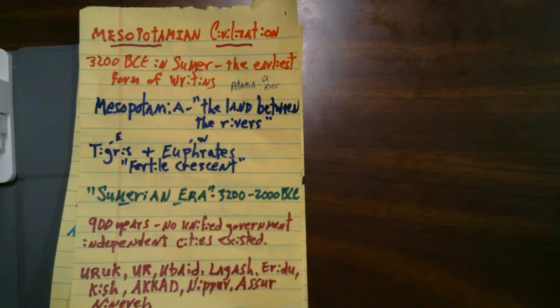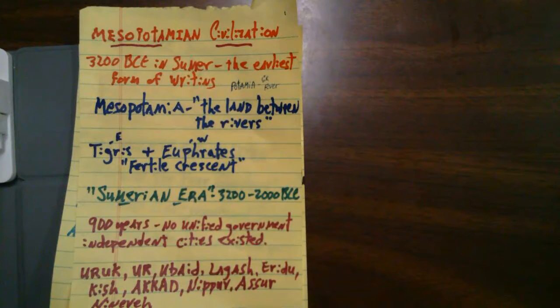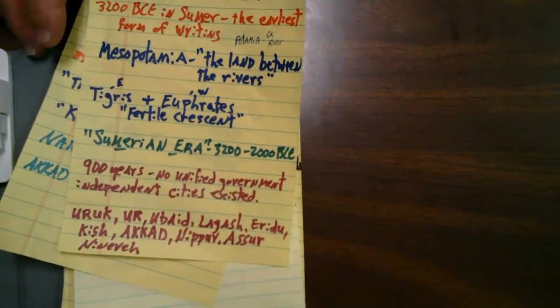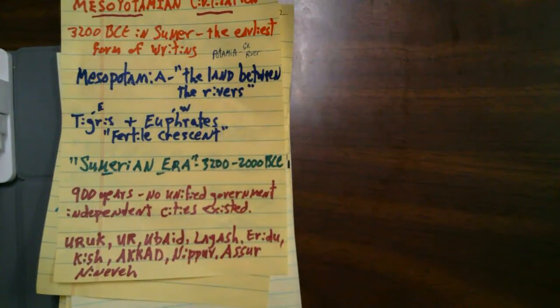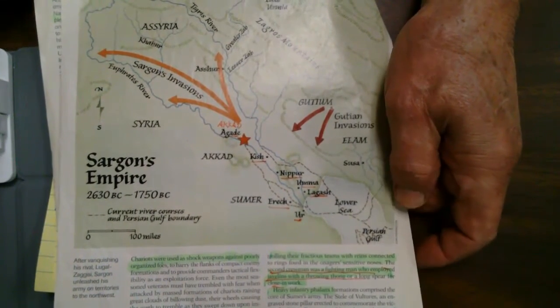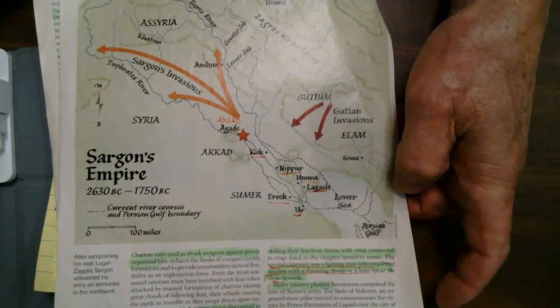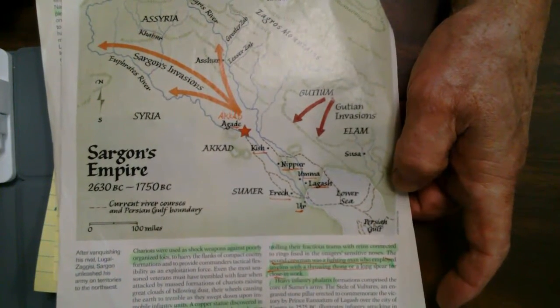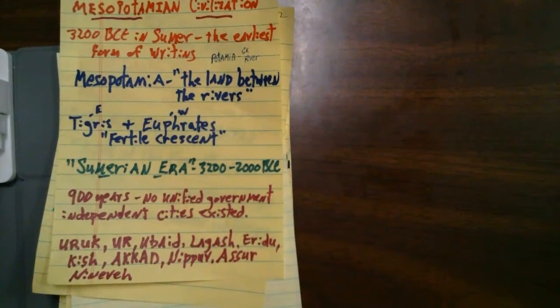The Sumerian era spans 3200 BCE to 2000 BCE. For the first 900 years there was no unified government whatsoever — cities existed as just independent city-states. Some of those cities include Uruk, Ur, Ubaid, Lagash, Eridu, Kish, Akkad, Nippur, and Asur. Most of these are just ruins in the desert today, but you can see their locations along the Tigris and Euphrates.